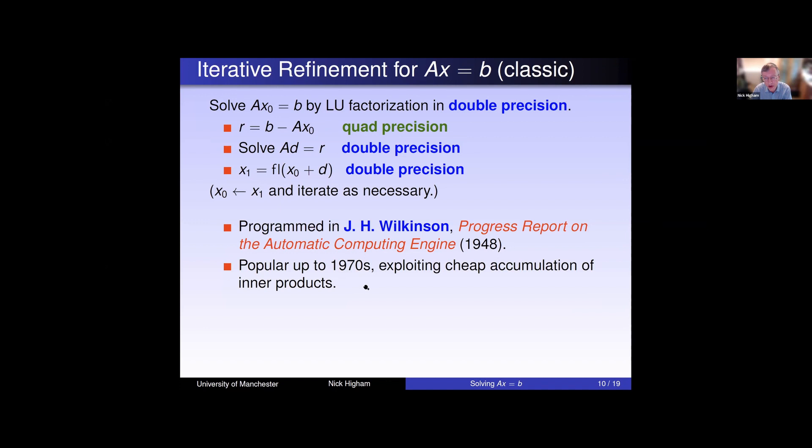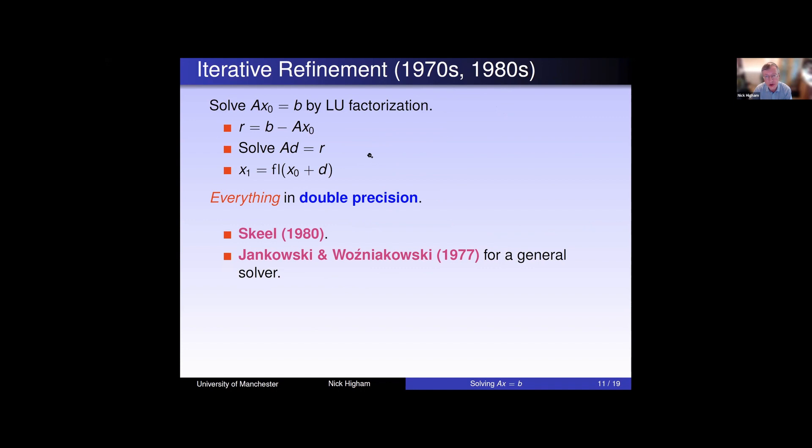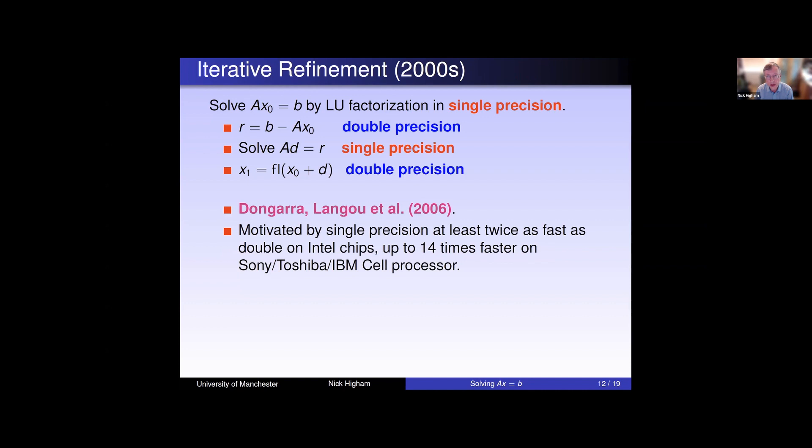We know from the theory that this will converge to a pretty accurate solution. This was a standard method up until the 1970s. But from that point onwards, it no longer became cheap to get higher precision inner products. The hardware was changing. So in the 1970s and 80s, people started to ask the question, what if we just do the whole thing in the working precision? Is there any benefit to doing refinement? Well, it turned out there was. Bob Skeel noticed this. He showed that you get a stronger form of stability. Jankowski and Wozniakowski analyzed for a general solver. What they both realized is that if you have a little bit of instability in your initial solution, then this refinement process in single precision can restore stability. So it does actually give you some benefits, even without the extra precision.